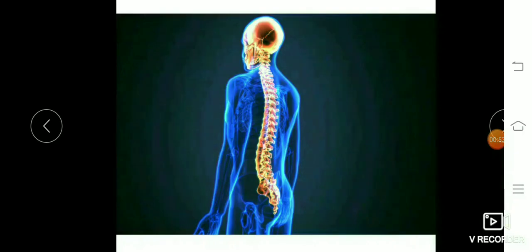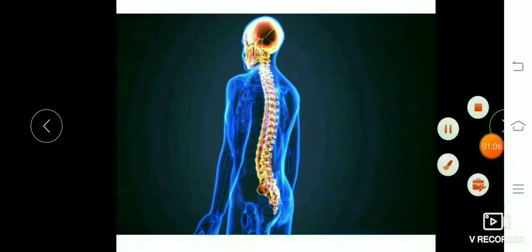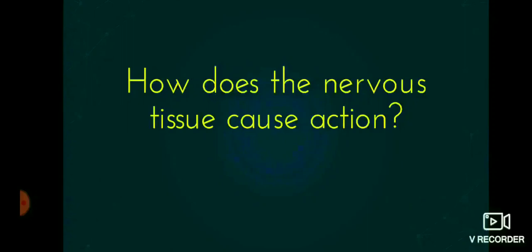The main function of the spinal cord is to conduct sensory and motor impulses to and from the brain, and more than that, it is the main center for reflex action. Now let's see how the nervous system causes action — like a reflex action. For example, when you see a bright object you immediately close your eyes, or when you touch a hot object you immediately take away your hand.